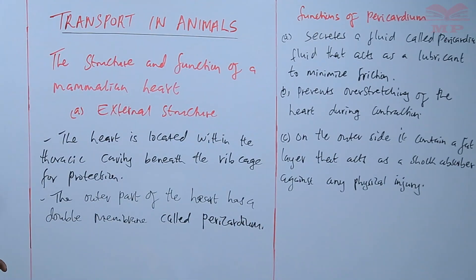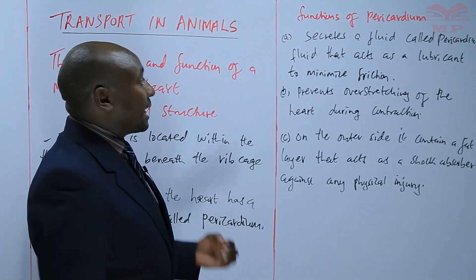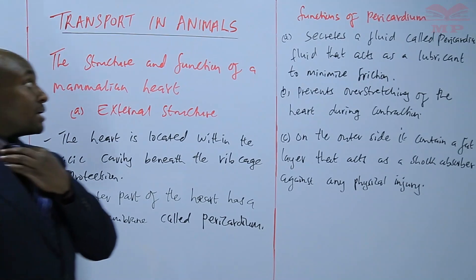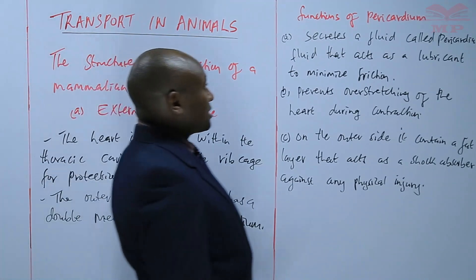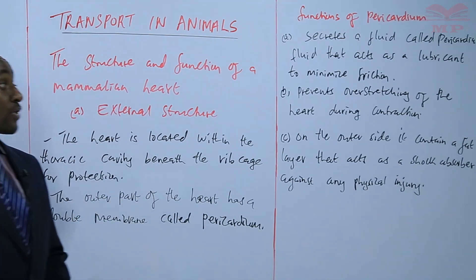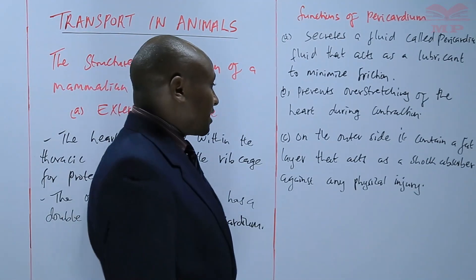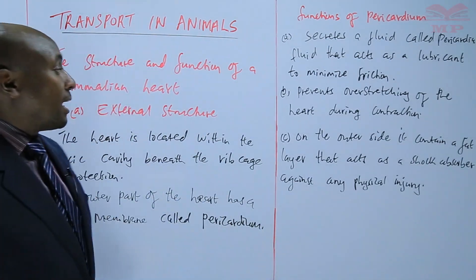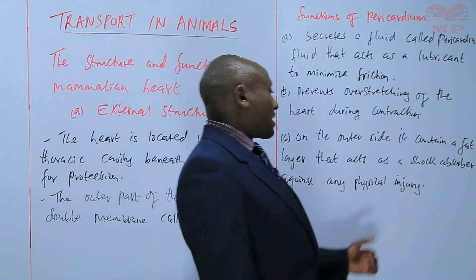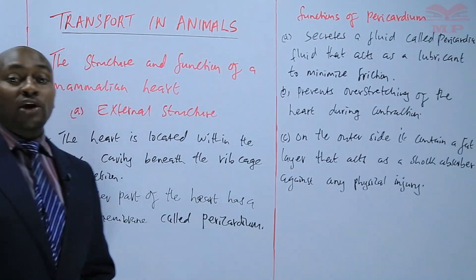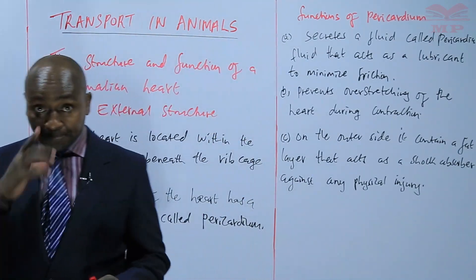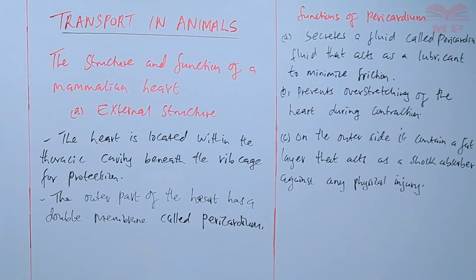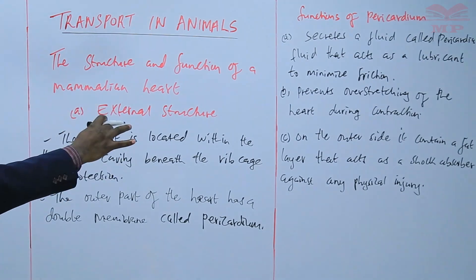So basically, on the outer part of the heart we have a double membrane known as the pericardium. The pericardium has three functions: it secretes pericardial fluid that acts as a lubricant; it prevents over-stretching of the heart during contraction; and on the outer side of the pericardium is a fat layer that acts as a shock absorber against any physical injury likely to happen to the heart.